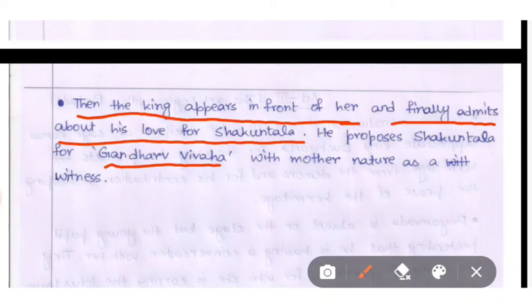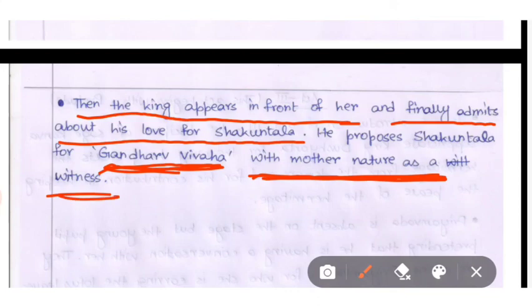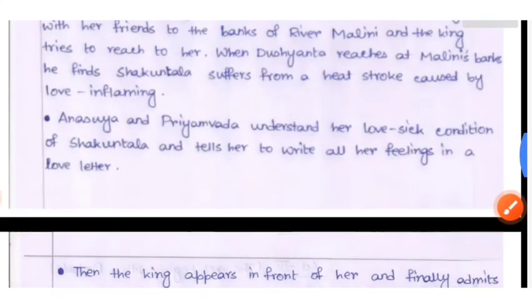With mother nature as a witness, King Dushwanta proposes a Gandharva Vivaha — a type of marriage where no human is a witness. Only the two lovers are married with Mother Nature as the sole witness. That is the type of marriage proposed here. That is all for Act 3.